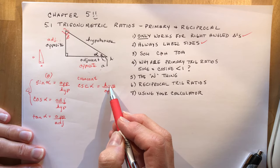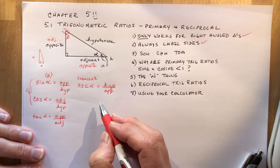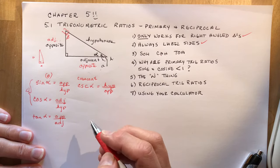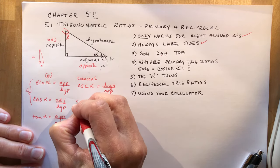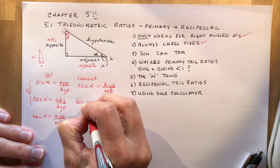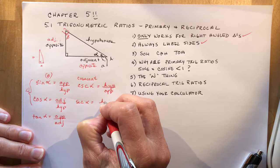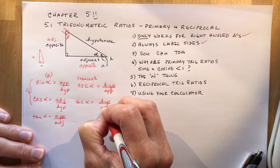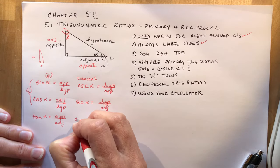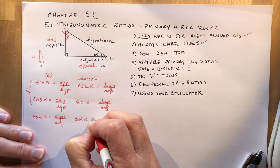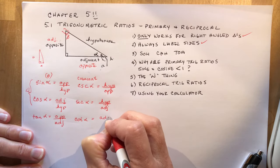And the cosecant of this is going to be the hypotenuse over the opposite. Now the reason they teach you this is because they think it would be easier for you to solve a ratio if your unknown is on the top. Now there's a lot easier ways to figure that out than learning all these reciprocal trigonometric ratios, but it's in the curriculum. So we will continue. Secant of alpha would be hypotenuse over adjacent, and tangent goes to cotangent, and that would be adjacent over opposite.